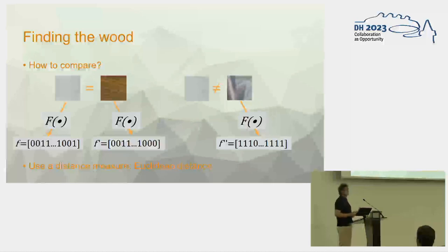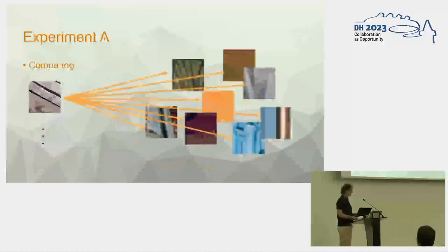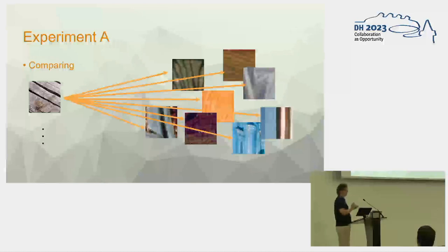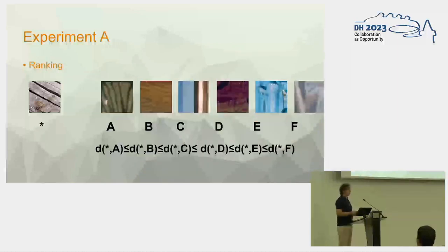And this feature extraction method we can use classical handcrafted methods or also in the next step some artificial intelligence to generate the vector presentation. In the first experiment we conducted we took every picture of real wood and measured the distance to every patch we retrieved from our paintings. And according to the computed distance we ordered them to the first place with the lowest distance to the query image.